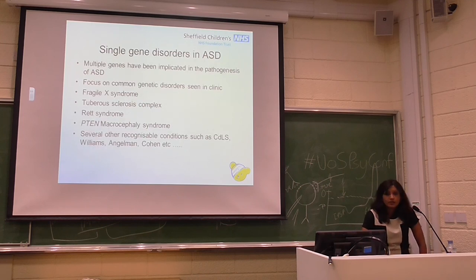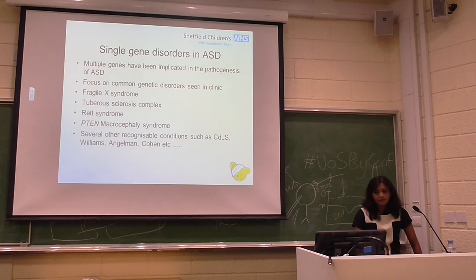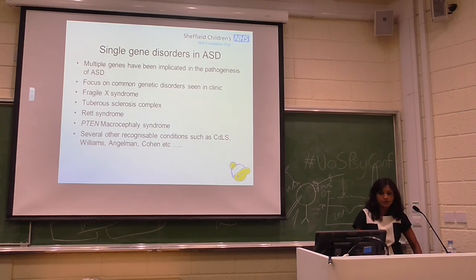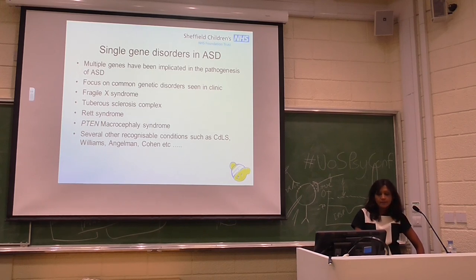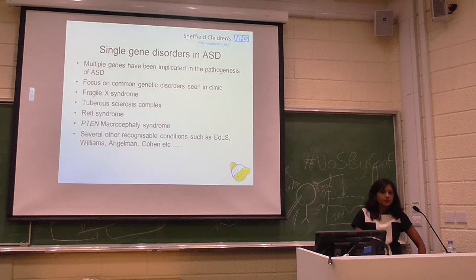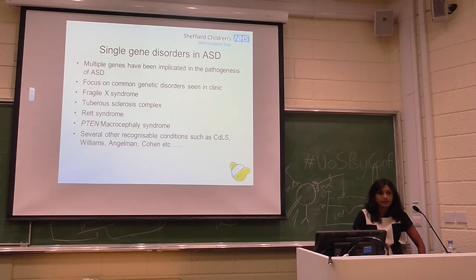Moving on to single gene disorders in ASD: multiple genes have been implicated in the pathogenesis of ASD. I've tried to focus on some of the common genetic disorders we see in clinic. The examples I have are Fragile X syndrome, tuberous sclerosis complex, Rett syndrome, and PTEN macrocephaly syndrome. But of course there's a long list of other recognisable conditions where autism is seen as an association — Cornelia de Lange, Williams, Angelman, Cohen — the list goes on.